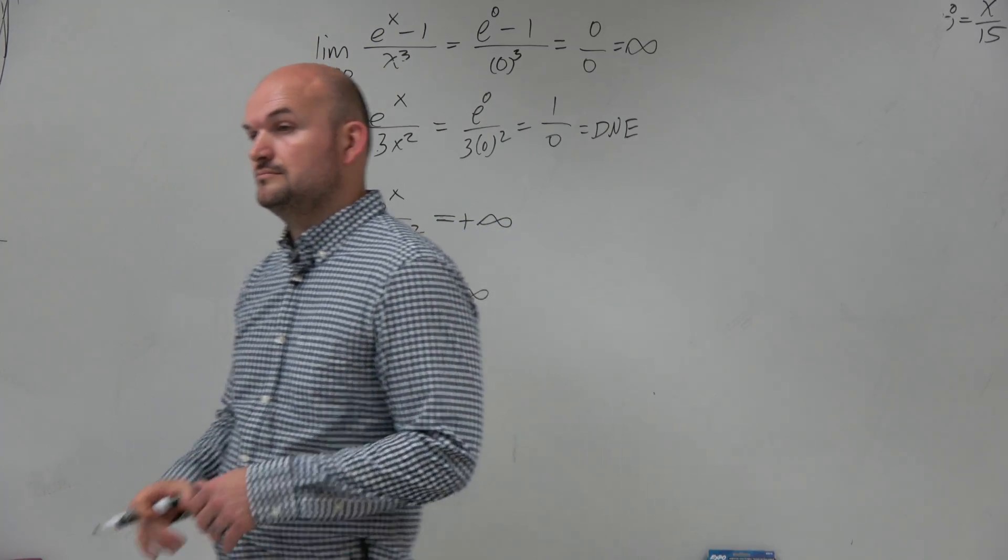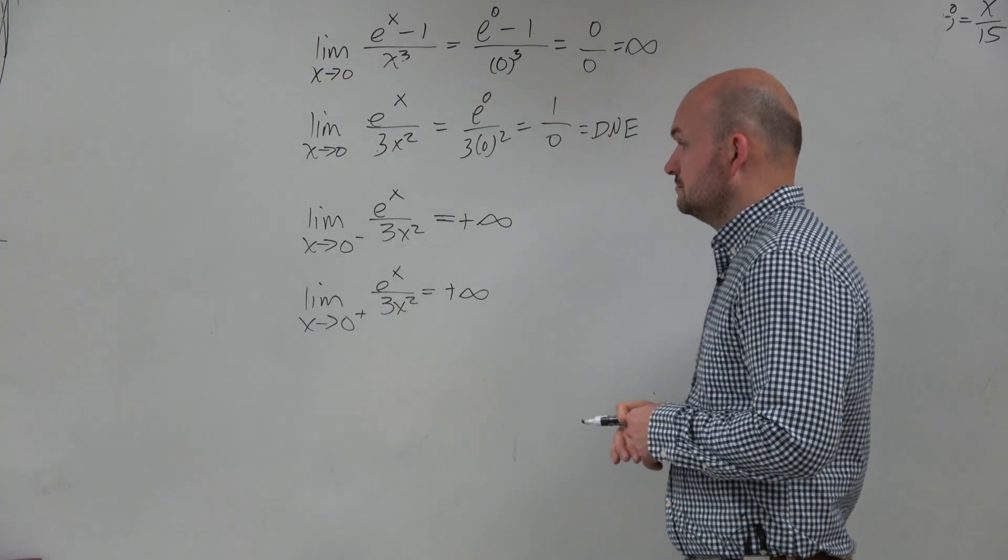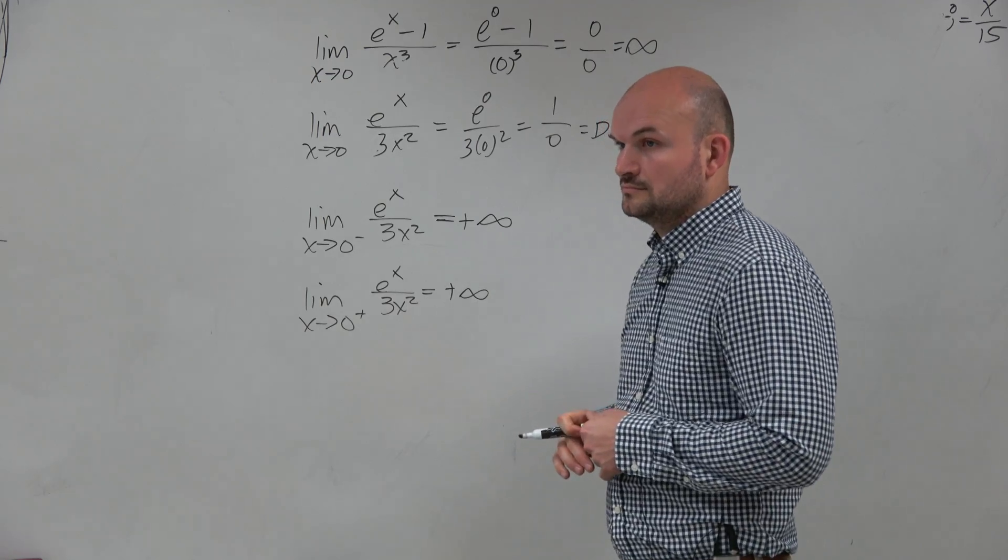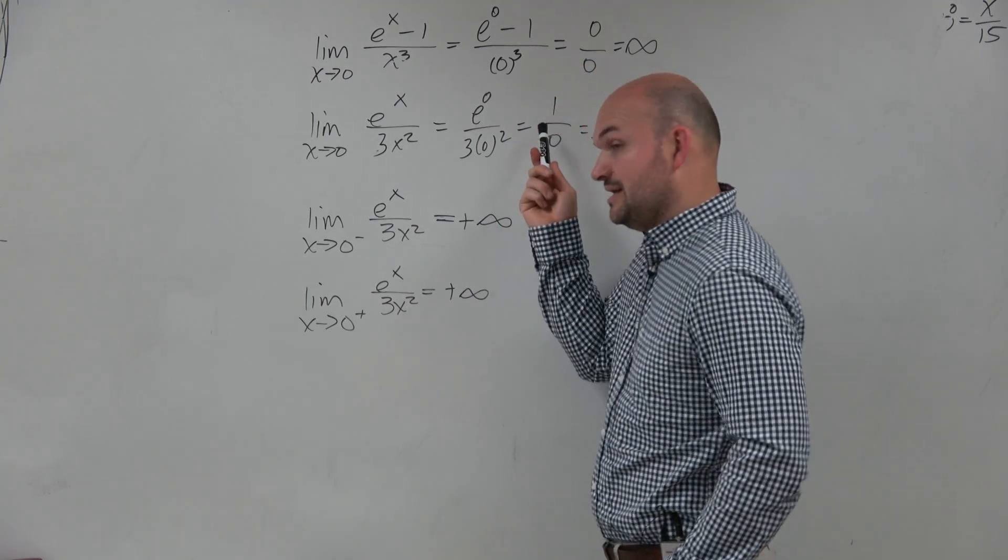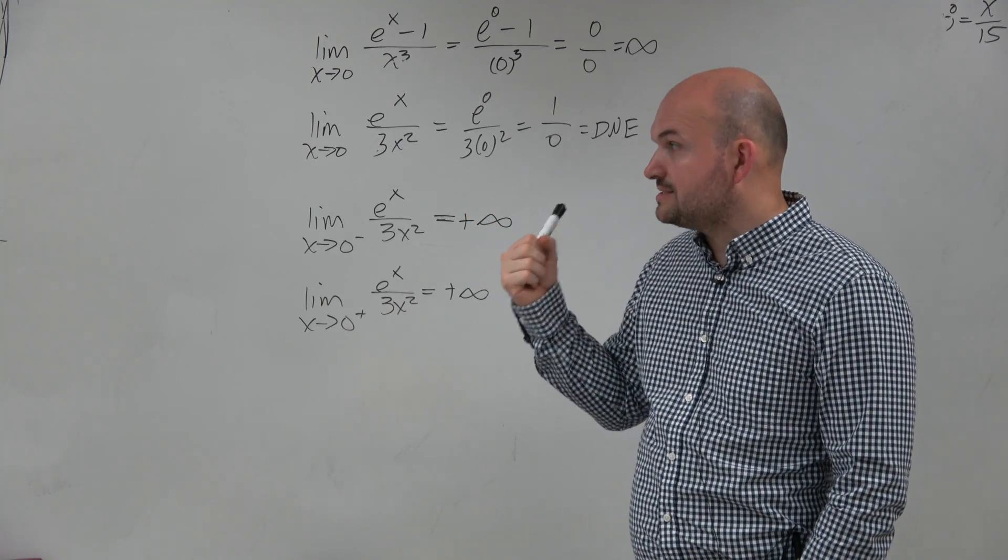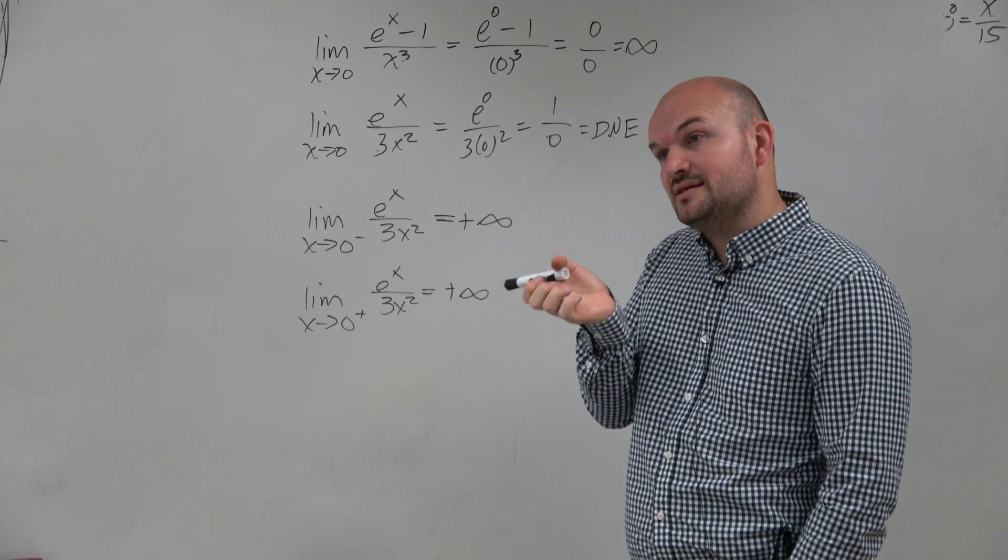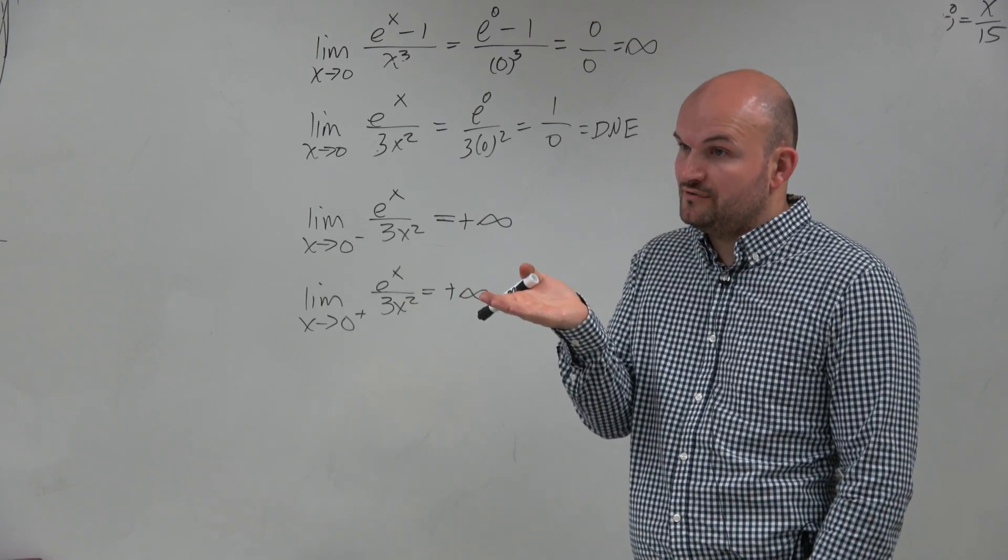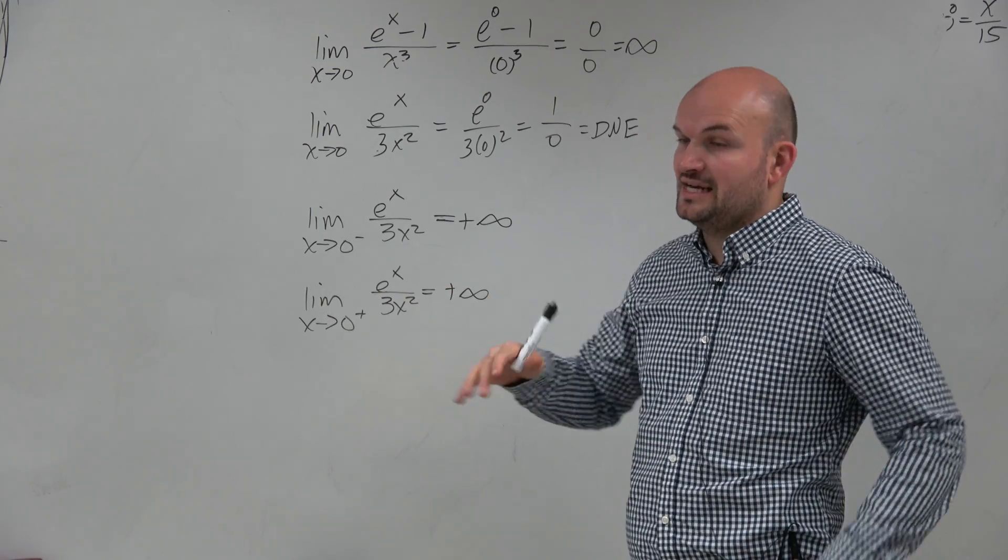Student: So even so it does not exist, then you have to plug it down to the left and right hand side and then do those? Instructor: Technically, if it does not exist, that is a perfectly true answer. But a lot of times, we like to get more specific on the nature of the limit and identify the direction.